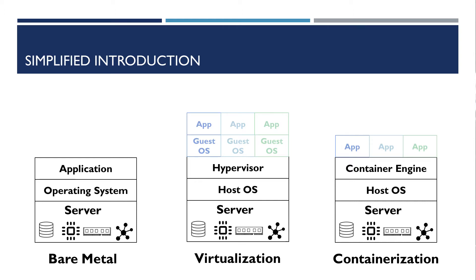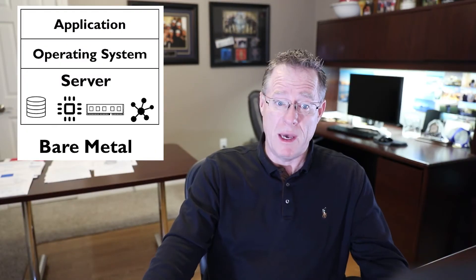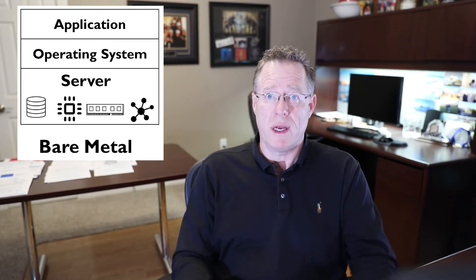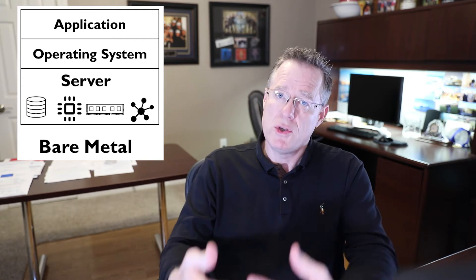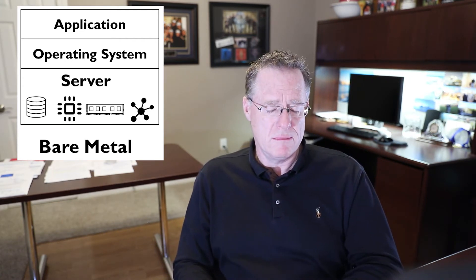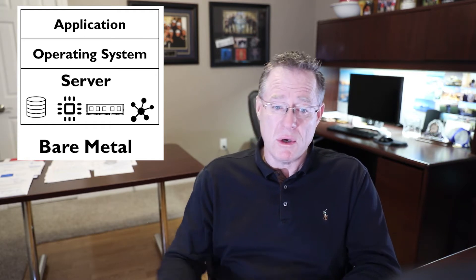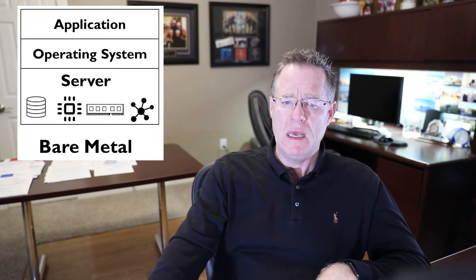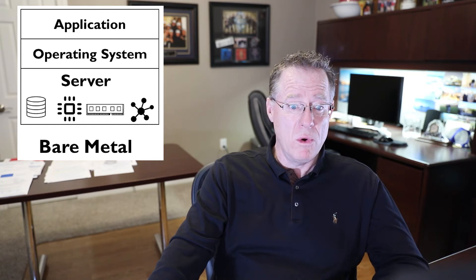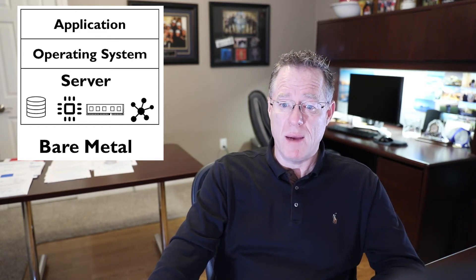This introduction depicts the key differences between the three models. First, bare metal. It's similar to desktop computing in that the operating system is installed directly on the server and then, in turn, an application is installed on top of that operating system. Multiple applications can be installed on top of the operating system, but in a server environment, scaling more than one application on an operating system can become troublesome.